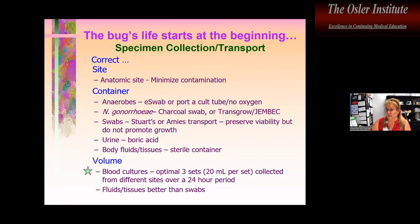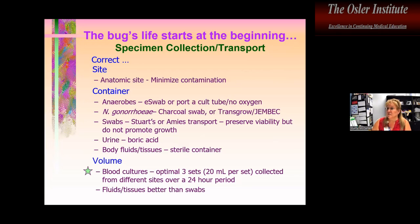Everything in microbiology starts at the beginning — a bug's life — and that starts with specimen collection and transport. The correct site is important; minimizing contamination and collecting in the appropriate container matters. Whenever we can, we want body fluids and tissues rather than swabs. For blood cultures, the optimum is three sets — usually 20 mL per set — collected from different sites over a 24-hour period.